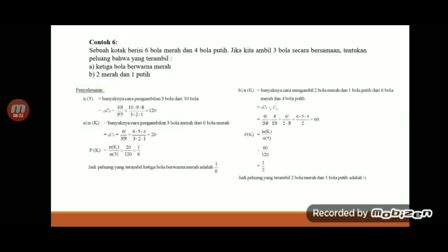Terus untuk peluangnya, berarti peluang terambilnya 3 bola merah dari 6 bola merah, berarti ruang kejadiannya adalah kombinasi 6 diambil 3. Disini ketemu 20. Berarti untuk peluangnya adalah ruang kejadian dibagi ruang sampel, berarti sama dengan 20 dibagi 120, atau boleh ditulis 1 per 6.